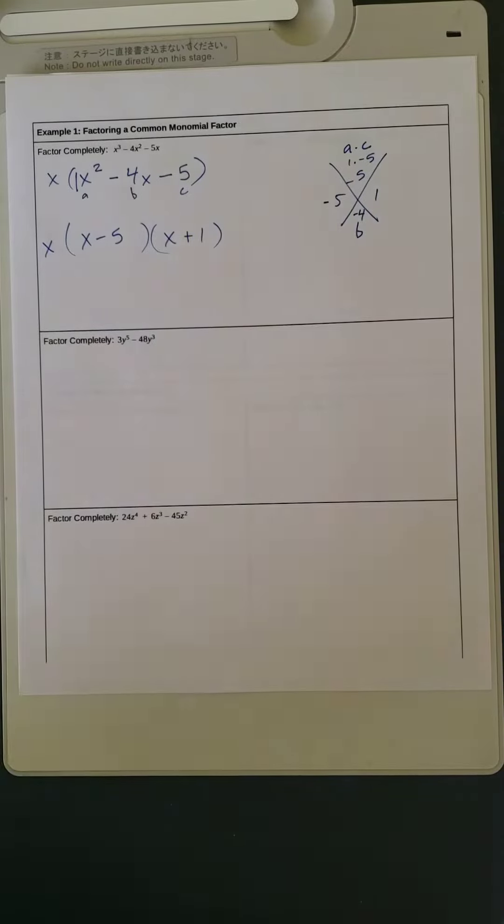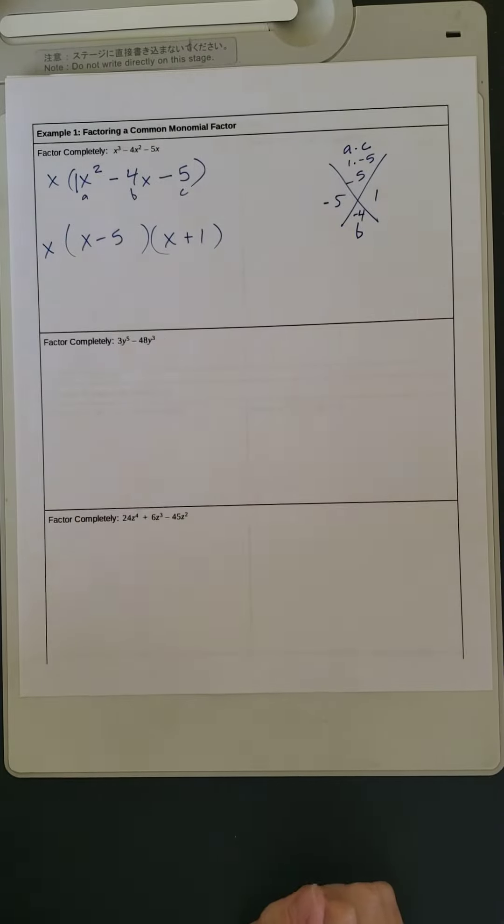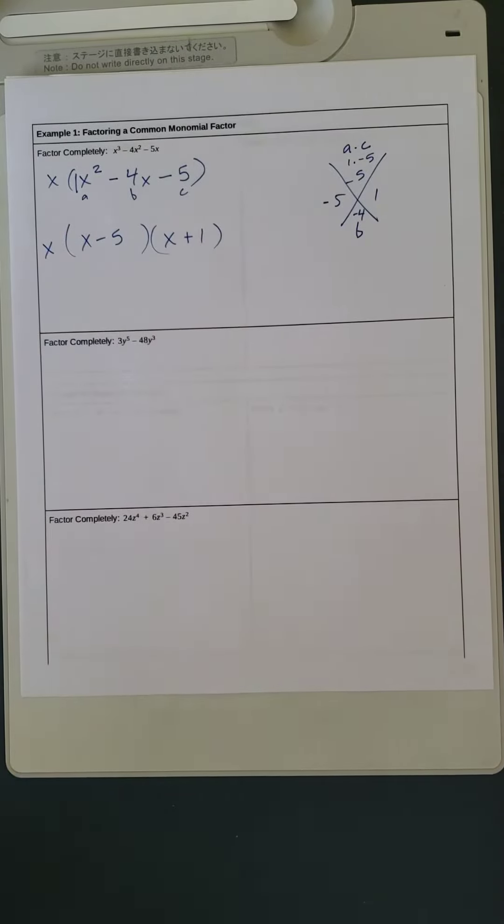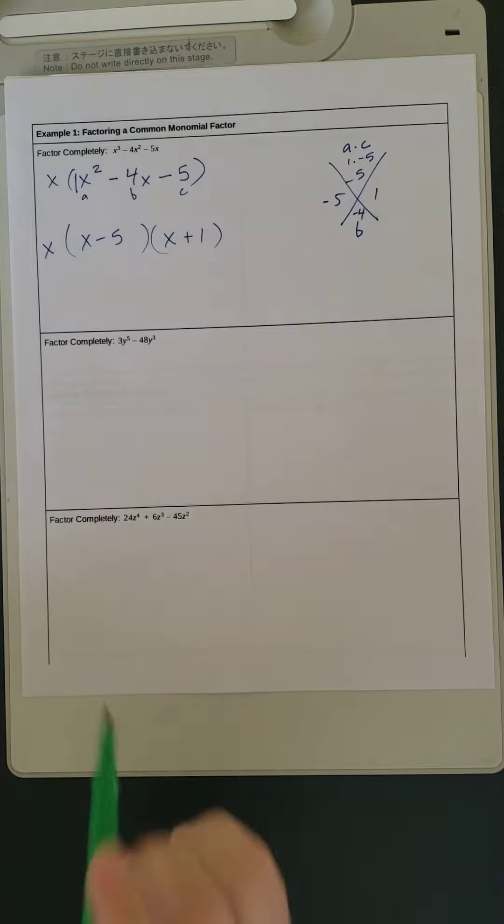Next example, you are being asked to factor completely 3y to the 5th minus 48y cubed. So first step again, factor out the greatest common factor.